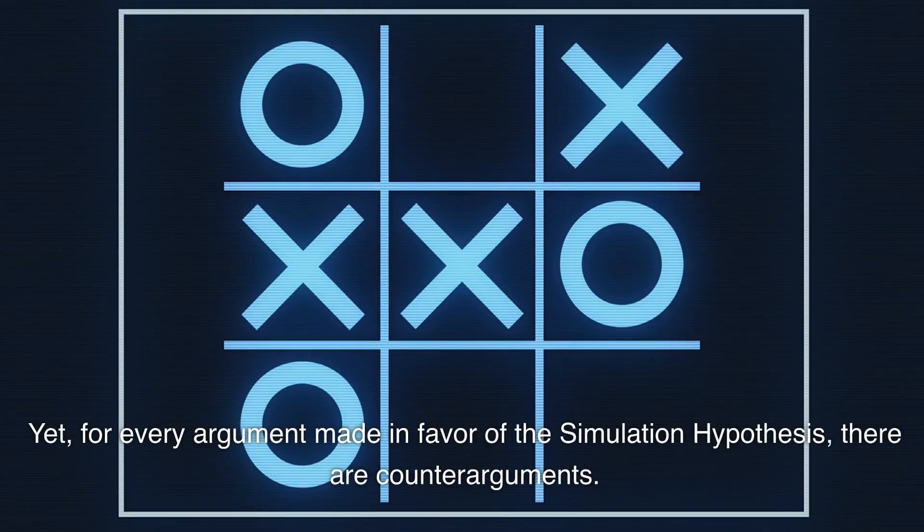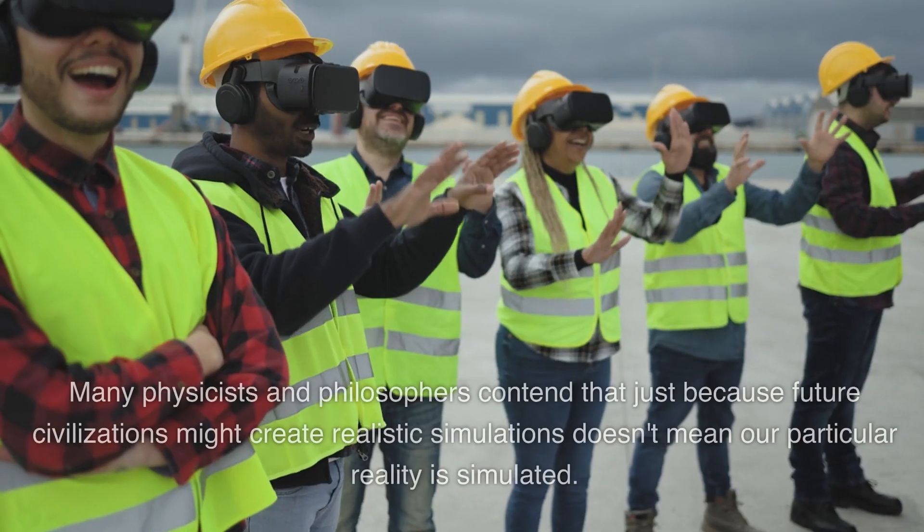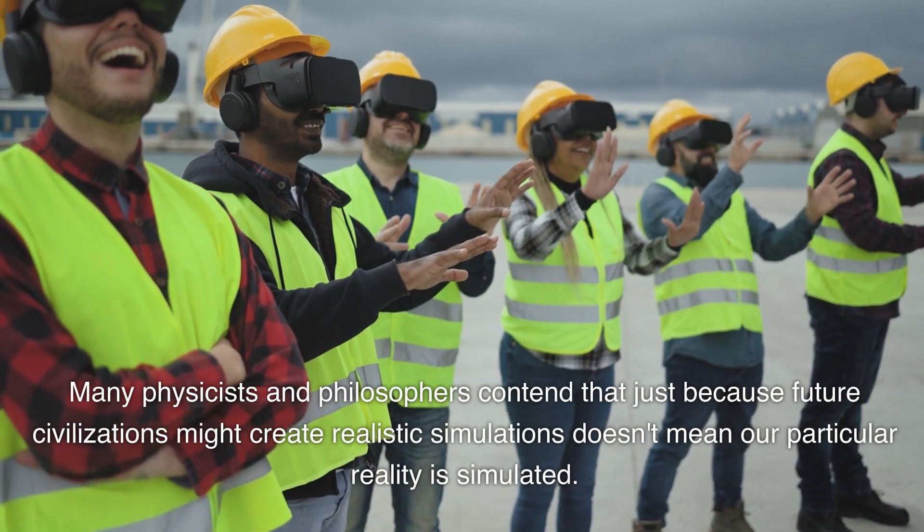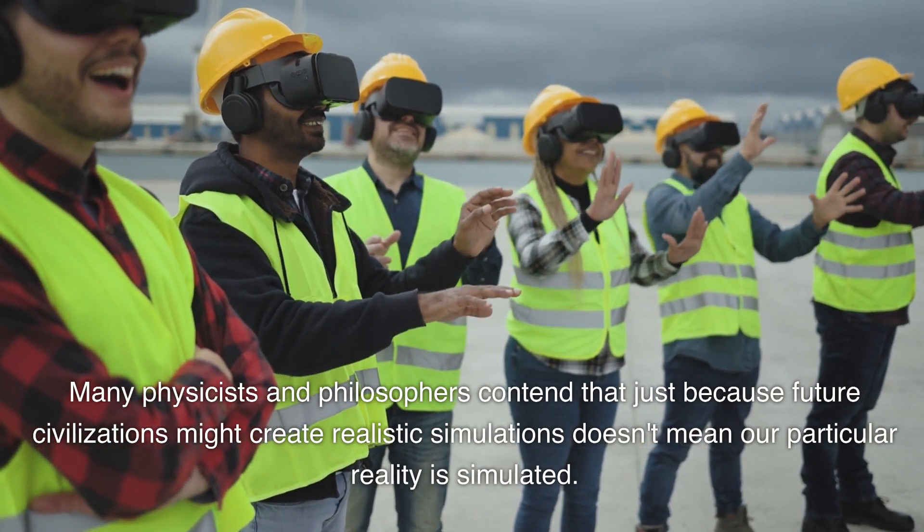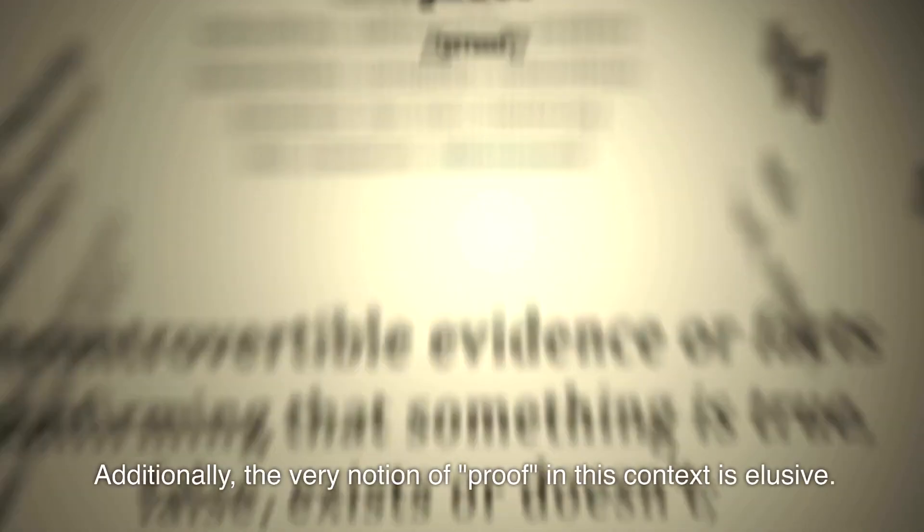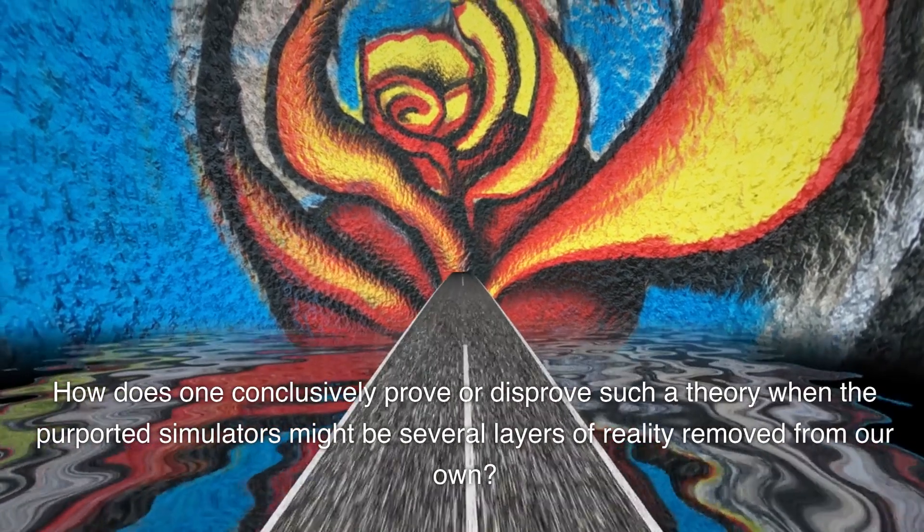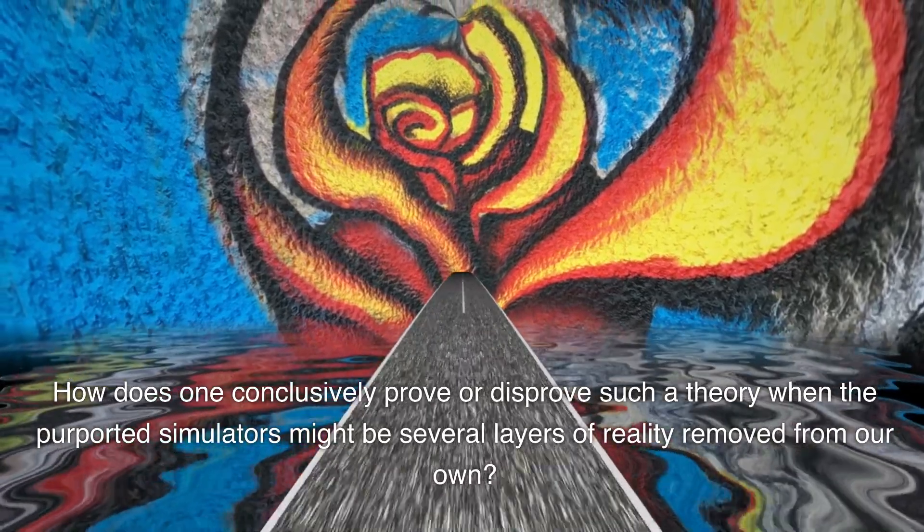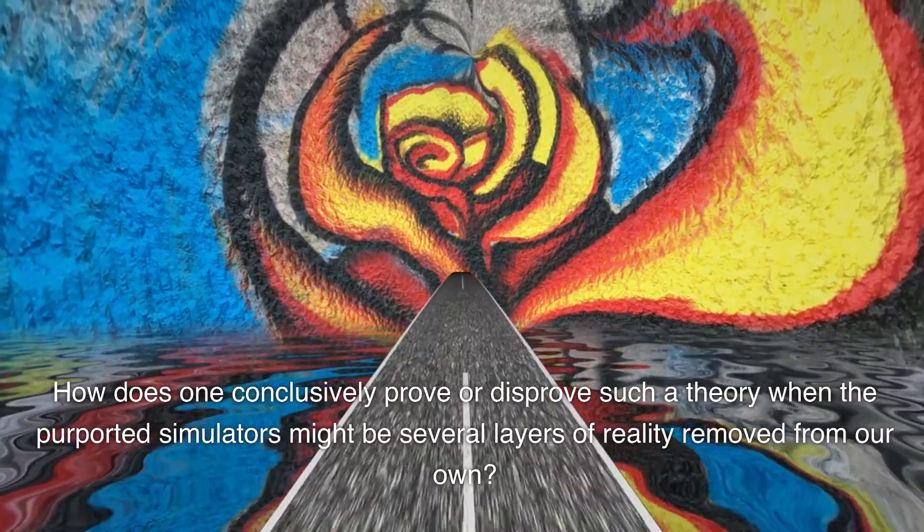Yet, for every argument made in favor of the simulation hypothesis, there are counter-arguments. Many physicists and philosophers contend that just because future civilizations might create realistic simulations doesn't mean our particular reality is simulated. Additionally, the very notion of proof in this context is elusive. How does one conclusively prove or disprove such a theory when the purported simulators might be several layers of reality removed from our own?